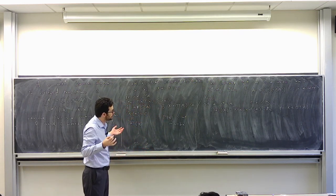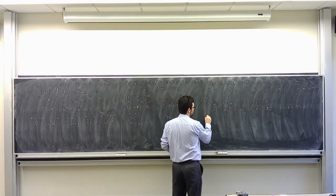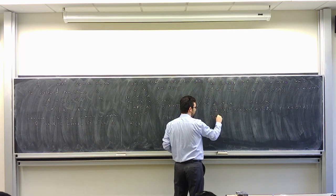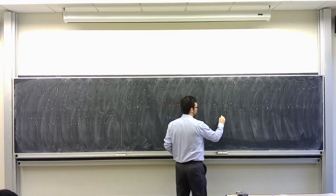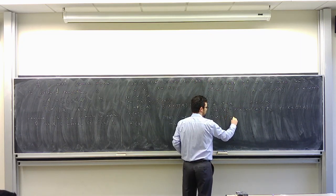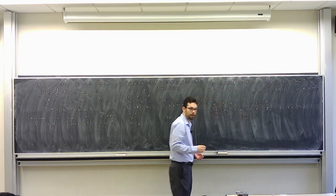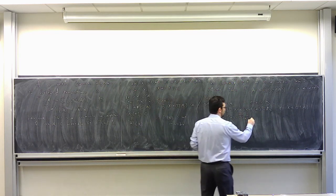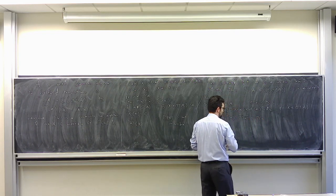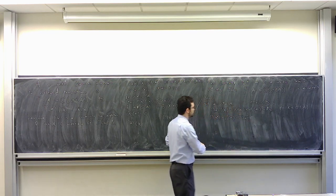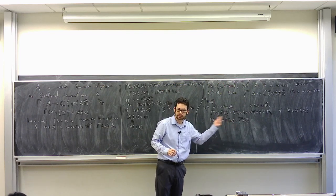So gamma of a is a real-valued function. Therefore, gamma of a-star — well, it's self-adjoint, so this is gamma of a. But this is also gamma of a conjugated, because it's a real-valued function, and therefore this equals gamma of a. So we have that at least for self-adjoint elements, the Gelfand transform preserves the star structure.